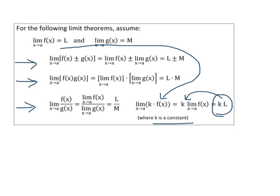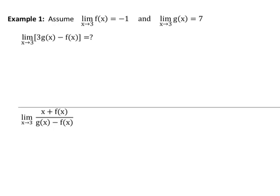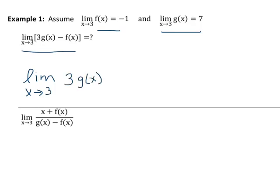Now let's look at some examples. The first example is the limit as x approaches 3 of 3 times g(x) minus f(x). We're given that the limit as x approaches 3 of f(x) equals negative one, and the limit as x approaches 3 of g(x) equals seven. The first thing I'm going to do is rewrite this as the limit as x approaches 3 of 3g(x) minus the limit as x approaches 3 of f(x).